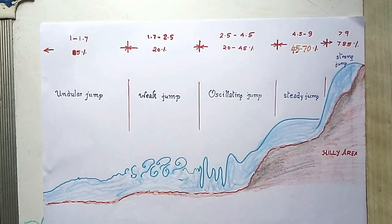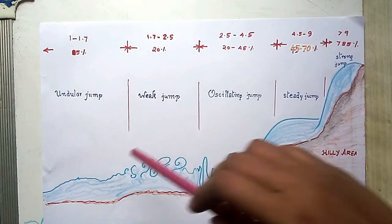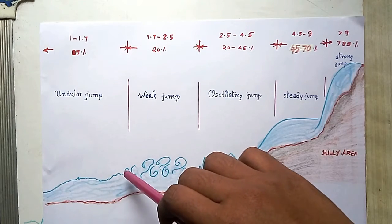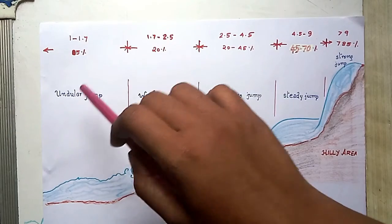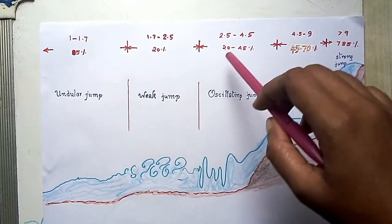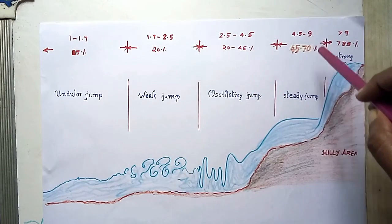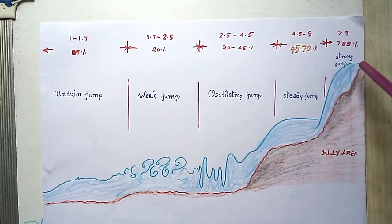F1 equal to 1, that is V divided by the square root of G times Y1 equal to 1, means the flow is critical and hence no jump can form. If F1 is 1 to 1.7, that is in this region, the flow is called undular. Where it is 1.7 to 2.5 it is weak, 2.5 to 4.5 it is oscillating, 4.5 to 9 it is steady, and greater than 9 it is strong.